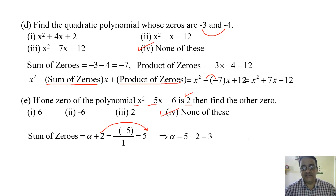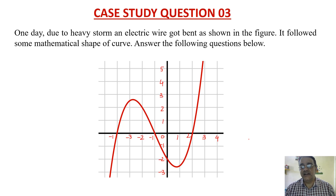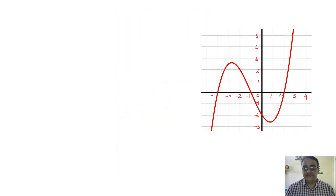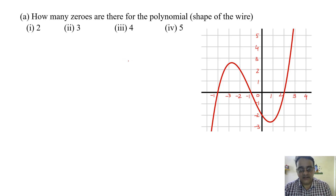The correct option is none of these. Now we move to case study question three. One day due to heavy storm, an electric wire got bent as shown in the figure. Based on this graph, the first question is: how many zeros are there for the polynomial that is the shape of the wire? The answer is 3.